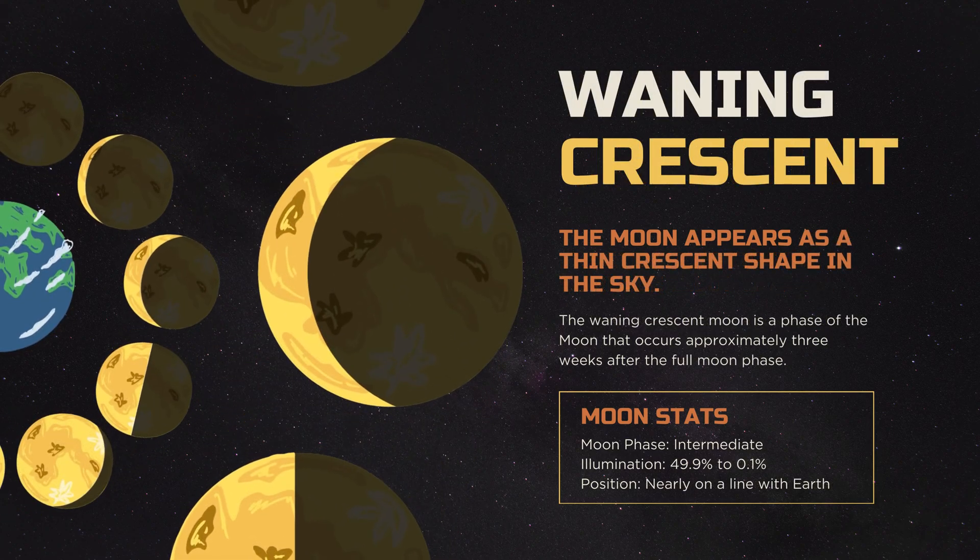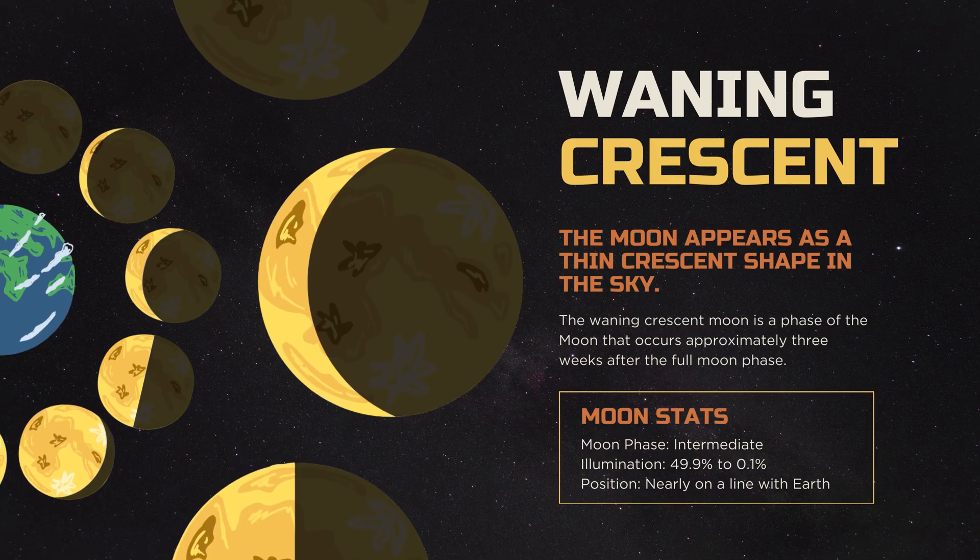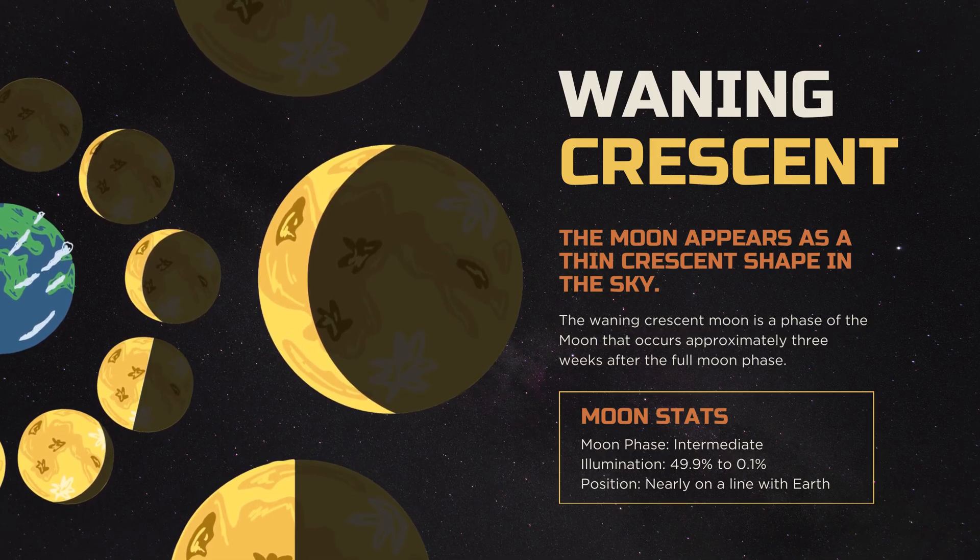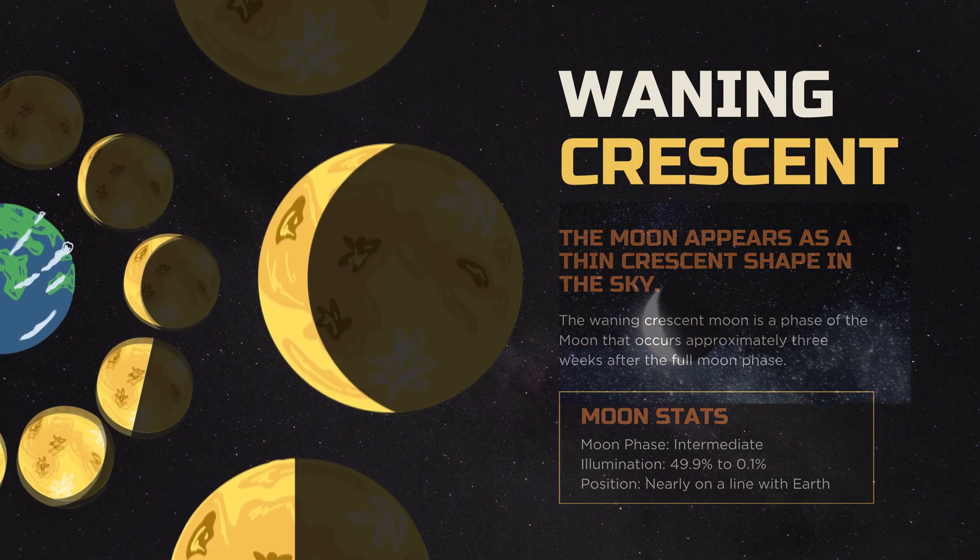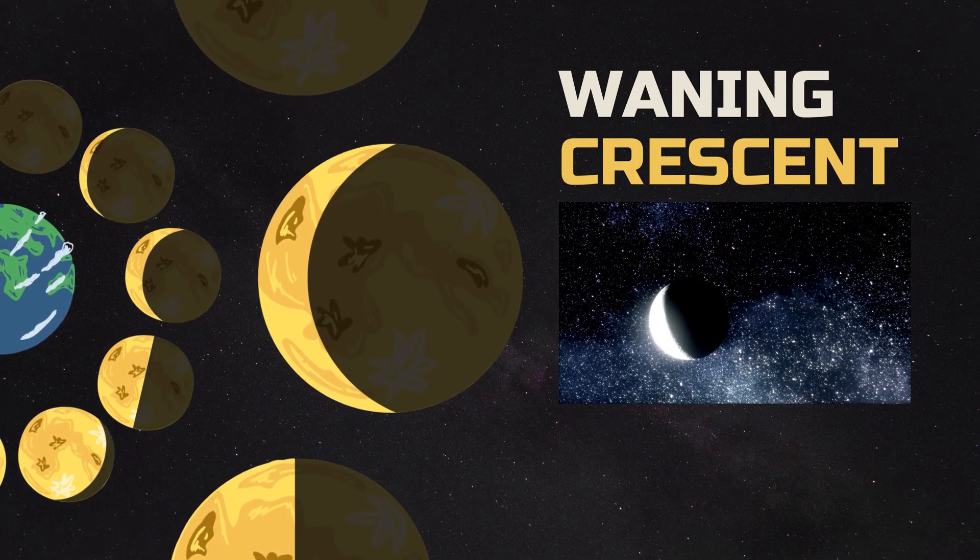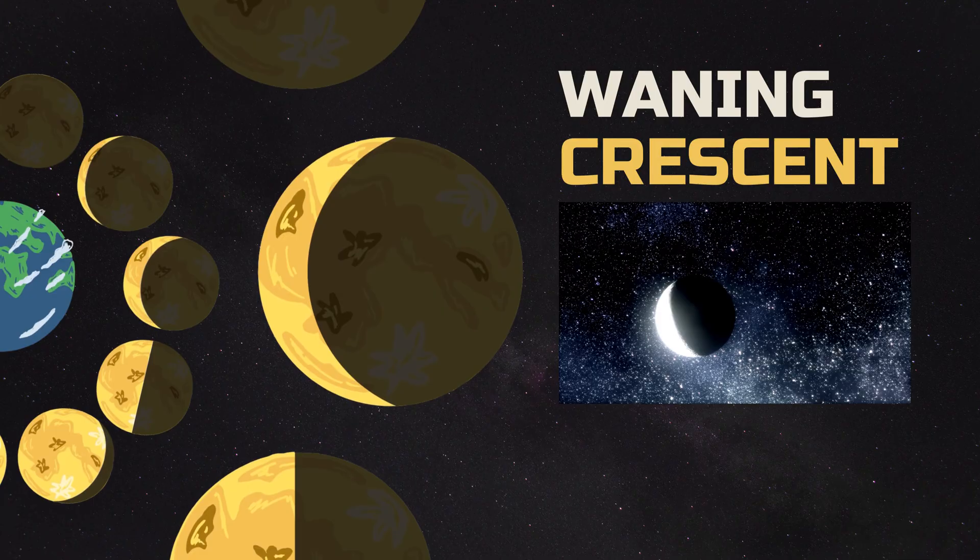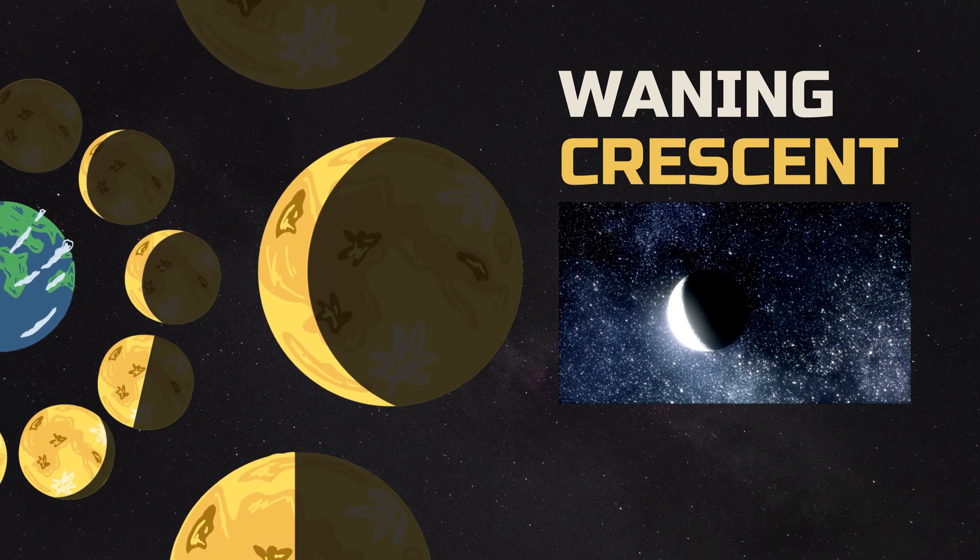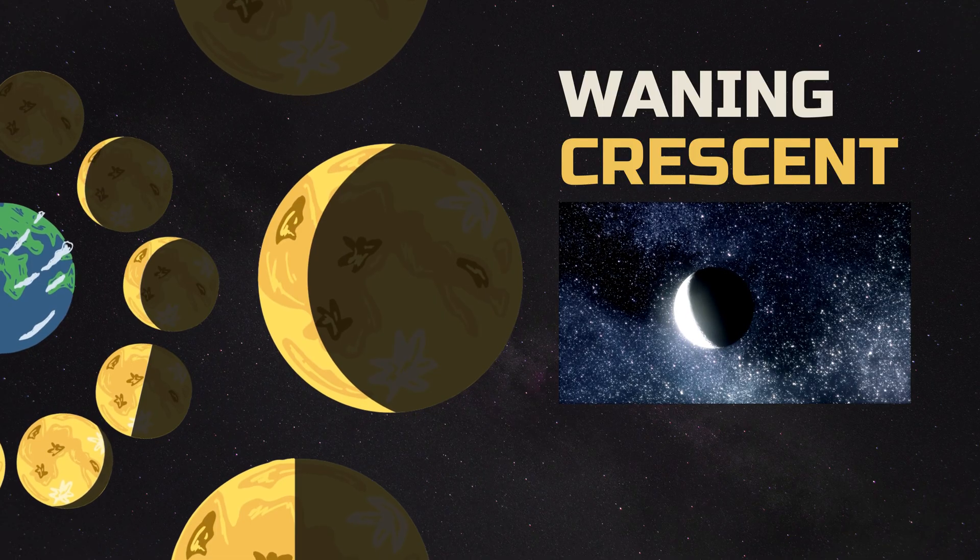Finally, we reach the waning crescent, where the Moon appears as a thin crescent shape in the sky, signaling the end of the lunar cycle. This phase occurs as the Moon continues to move in its orbit around the Earth, and the illuminated side of the Moon is gradually shrinking as it approaches the New Moon position.